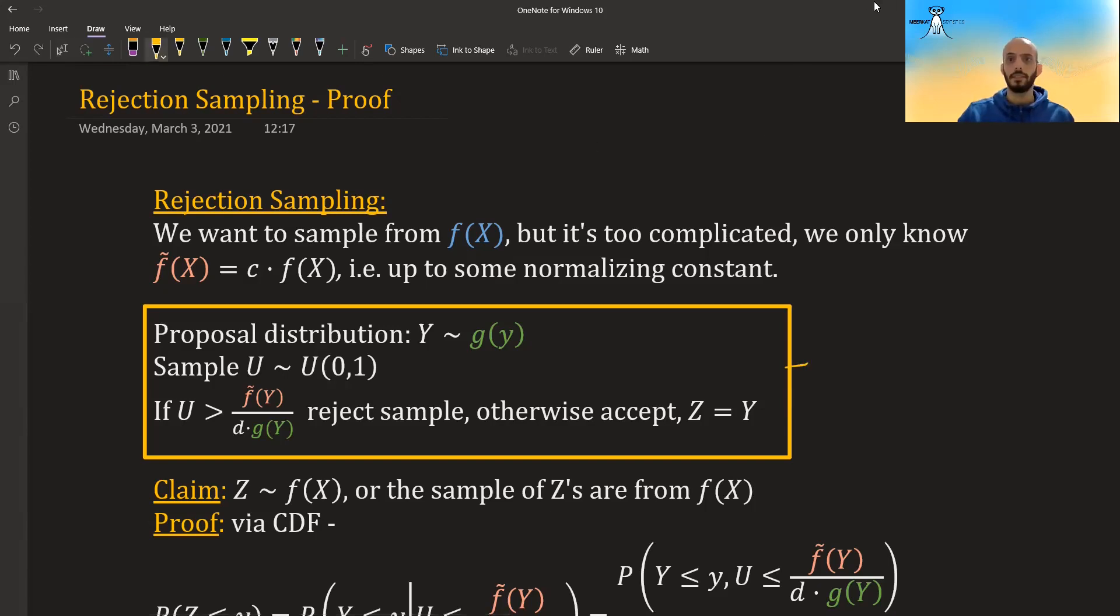The algorithm is this thing over here. You have some proposal distribution g(y), and you sample from it. And then you also sample from a uniform distribution. And the proposal distribution, up to some constant, if you multiply it by a constant, has to completely cover or envelope the distribution that we do know how to calculate, the unnormalized distribution.